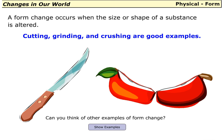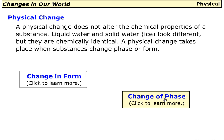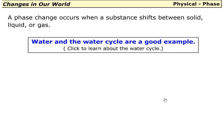A form change occurs when the size or shape of a substance is altered. Cutting, grinding, and crushing are good examples. Can you think of other examples of form change? Here are a few: gravel crushed from rocks, wheat ground into flour, and coffee beans being ground.